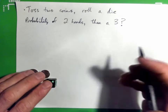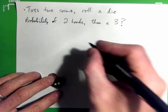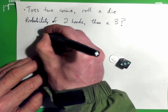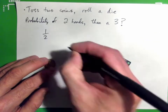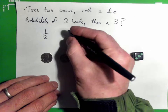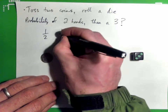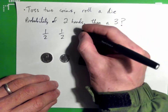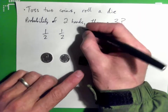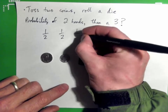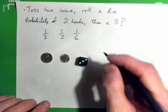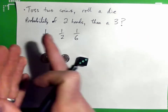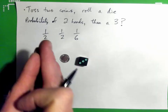The probability of getting heads on the first coin is one half. The probability of getting heads on the second coin is one half. And the probability of getting a three on the dice is one out of six. So those are our three individual probabilities.